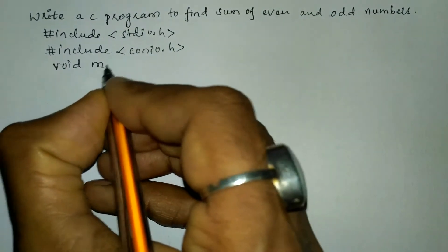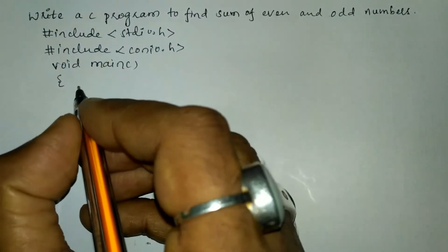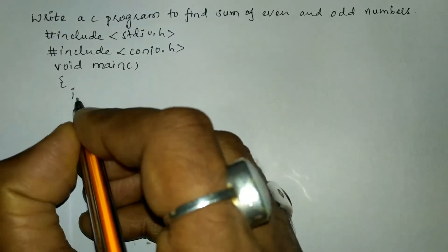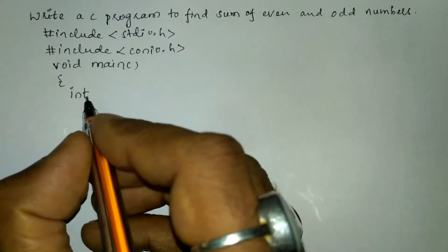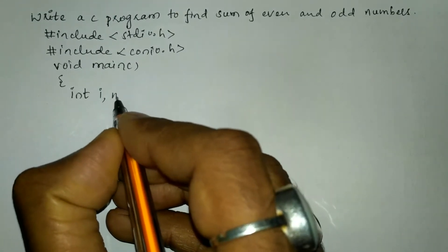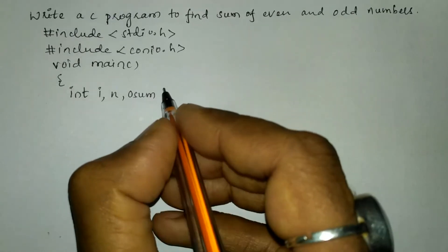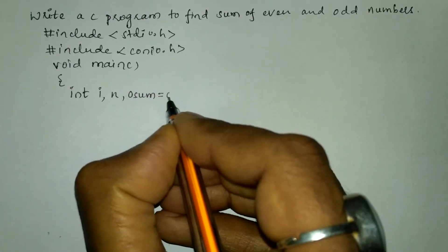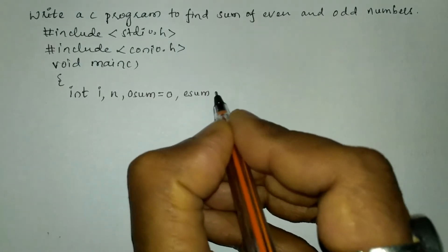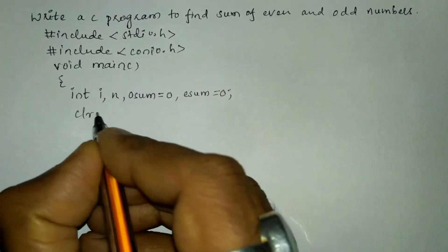Now we will write the void main function with a curly open brace. Here I am going to declare all the necessary variables to be used in the program with their respective data types. I will take integer variables i, n, and one more variable called osum — that is odd number sum — set to zero. Next, esum, that is even number sum, is also set to zero.